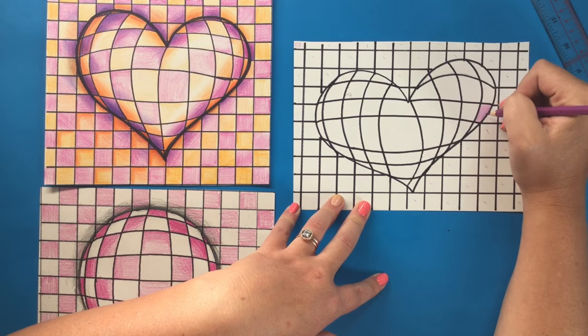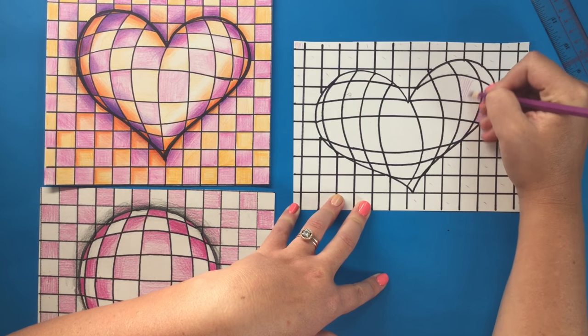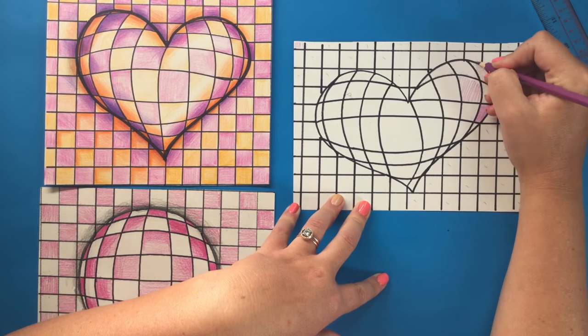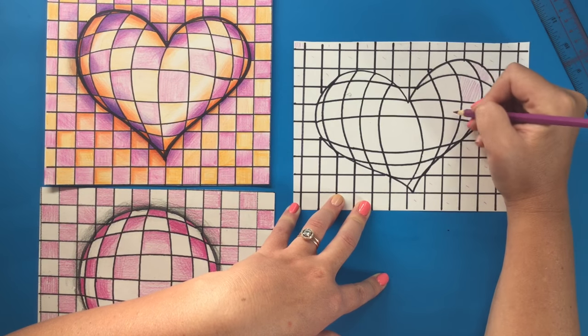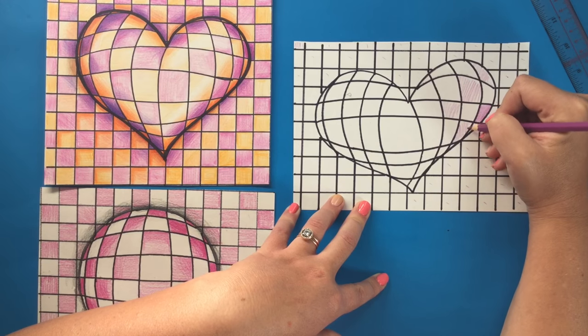So that means that if on my heart this one is colored, I know that this one can be colored because it's at a diagonal. And this one can be colored because it's at its diagonal. And then I can continue the pattern quite easily from that point on.